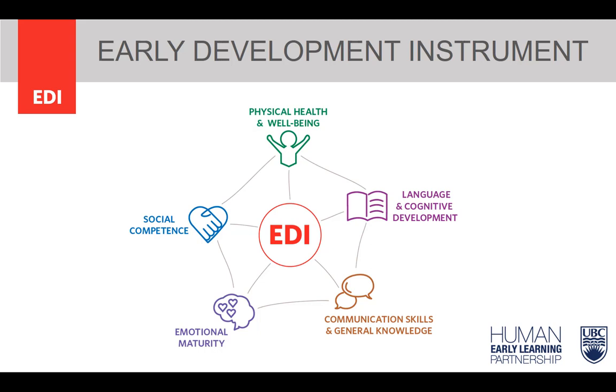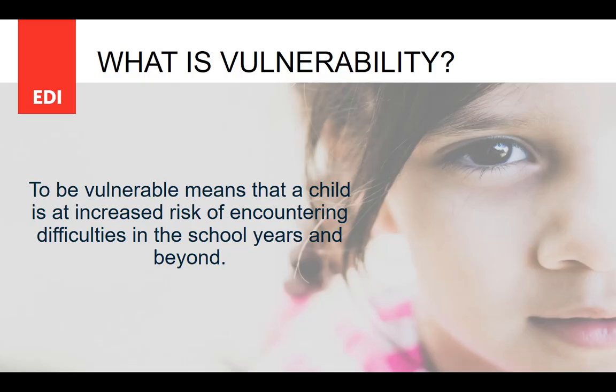Each scale has a vulnerability cutoff, and if children fall below this cutoff, they are considered to be vulnerable on that area of development. When we say vulnerable, we mean that without additional support and care, a child may experience future challenges in school and society. Research has demonstrated that the cutoffs have predictive capability — being below the cutoff in kindergarten has a direct relationship to children's scores in later grades.